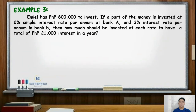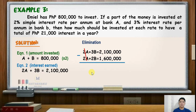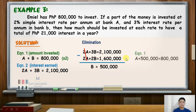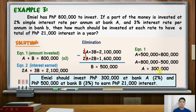For this item, let's use elimination. We multiply equation 1 by 2: 2A plus 2B equals 1,600,000. Subtracting from equation 2: 2A minus 2A cancels out, and 3B minus 2B equals B; 2,100,000 minus 1,600,000 equals 500,000. Hence, 500,000 pesos will be invested at Bank B with 3% interest. Solving for Bank A using equation 1: A plus 500,000 equals 800,000, so A equals 300,000. Therefore, 300,000 pesos should be invested at Bank A with 2% interest rate.